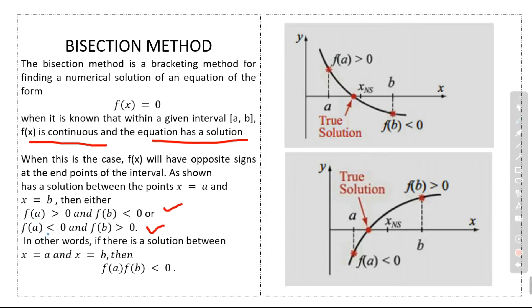In other words, if there is a solution between x = a and x = b, then f(a) · f(b) < 0. This is our condition. This is a graph of our function when f(a) > 0 and f(b) < 0, and also when f(b) > 0 and f(a) < 0.